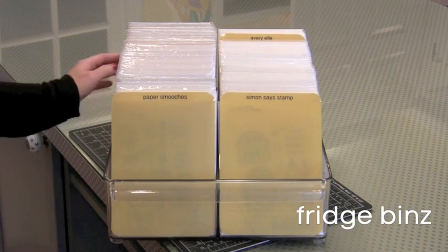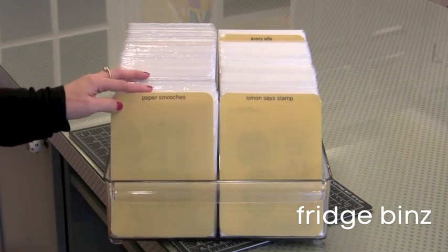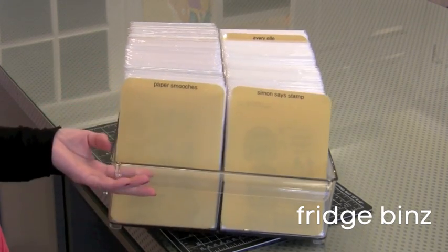Now if you've been to my blog before you know I've shared before my clear and cling stamp storage. I'm just going to show it real quickly here and I will put a link to the other videos I've done on this. This is how I store my clear and cling stamps. This is a fridge bin.